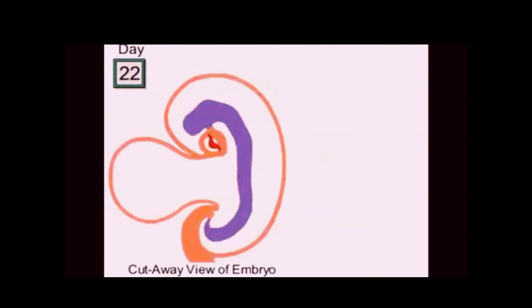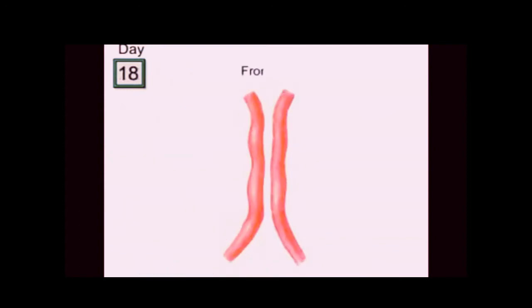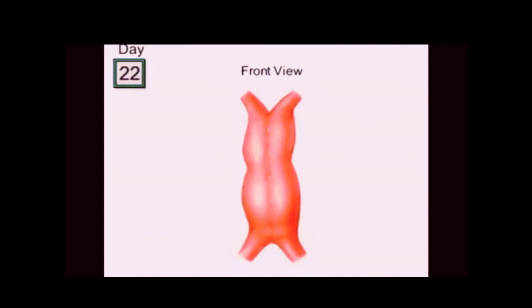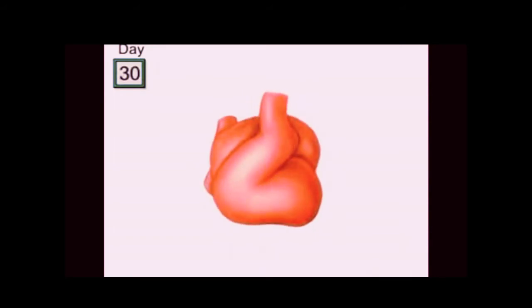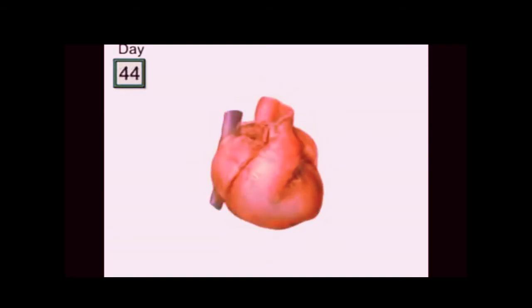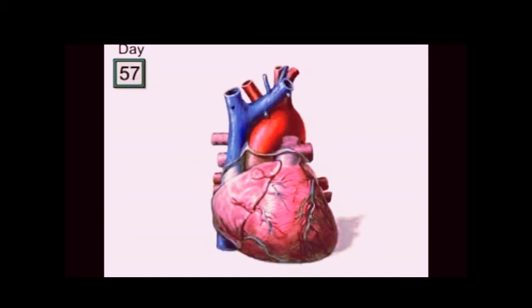Let's go back to day 18 and watch this happen from a different viewpoint. Here are two tubes in our embryo's chest region seen from a front view. Over the next two days, these tubes fuse together. The tube now starts bending and twisting, and over the next eight days it forms a simple version of the heart. By the time the embryo becomes a fetus at two months, the heart bears a close resemblance to what it will look like after the baby's born.